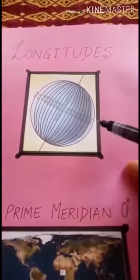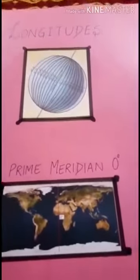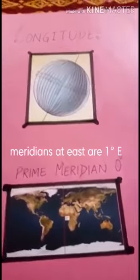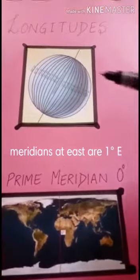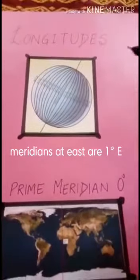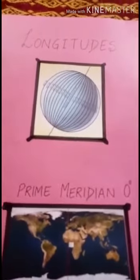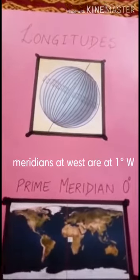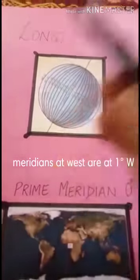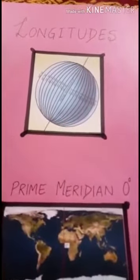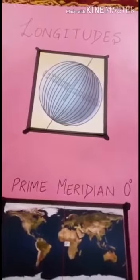Other longitudes are drawn to the east and west of the prime meridian. Here you can see the prime meridian at zero degree and others at east or west. The meridians of longitude to the east of the prime meridian are numbered as one degree east up to 180 degree east. Similarly, the meridians of longitude to the west of the prime meridian are numbered as one degree west up to 180 degree west.